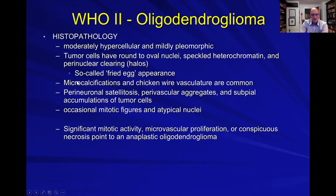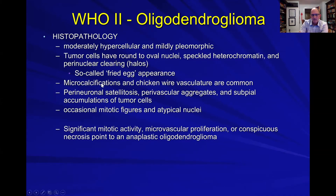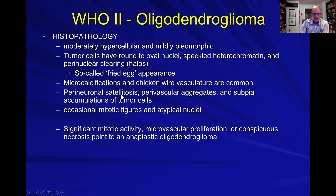These tumors have calcifications in them. So if you suspect an oligo, go back to the original head CT and see if you see evidence of some calcification. You will also have this chicken wire vasculature in these tumors, which is common for oligos.